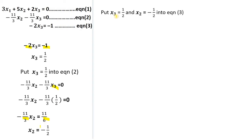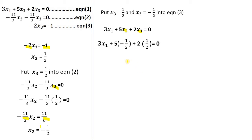Then we substitute S3 equals one half and S2 equals negative 1 over 2 into equation 1 to find S1. Wherever we see S2 we put negative 1 over 2, and wherever we see S3 we put 1 over 2. Simplifying and dividing both sides by 3, we get S1 equals 1 over 2. So the solution is: S1 = 1/2, S2 = −1/2, and S3 = 1/2, giving the vector [1/2, −1/2, 1/2] transpose.